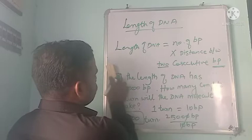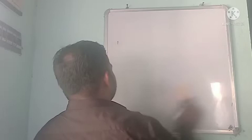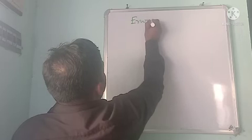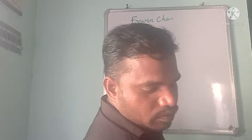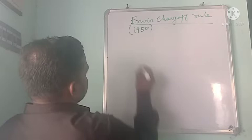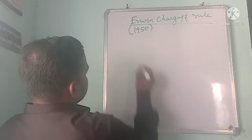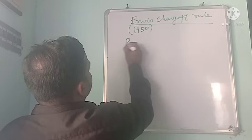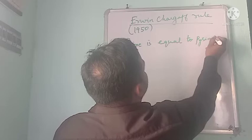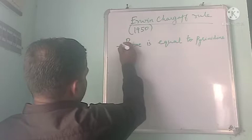Let's move on to Erwin Chargaff's rule, which is a very important concept. You will get compulsory questions on this in the next exam. Chargaff's rule was implemented around 1950. It states that Purine is equal to Pyrimidine — irrespective of the sources in the DNA molecule, the purine content is always equal to the pyrimidine content.